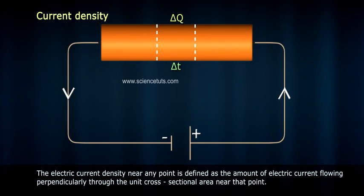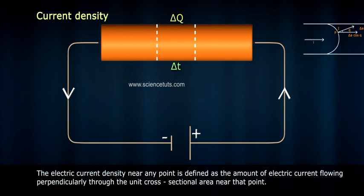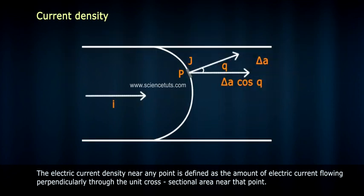Current density is defined as the amount of electric current flowing perpendicularly through the unit cross-sectional area near that point.